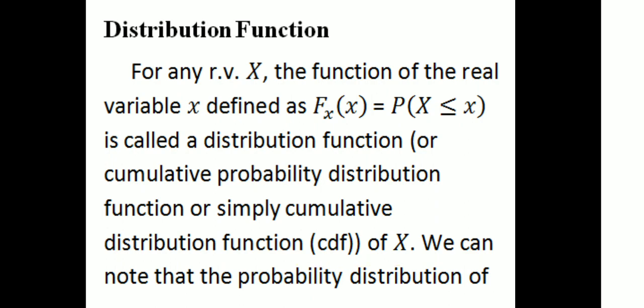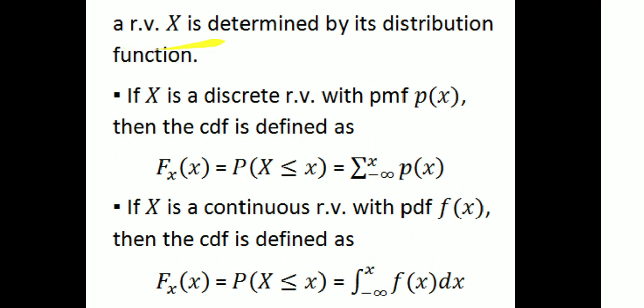For a random variable x, the distribution function is a real-valued function. That is, F_x(x) = P(X ≤ x). The particular variable x is called a probability distribution. We can note that the probability distribution of a random variable x is determined by its distribution function, that is, the probability distribution function.